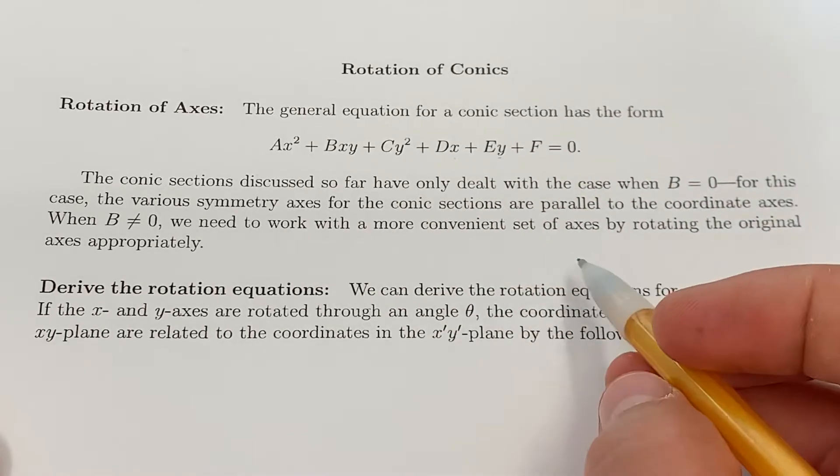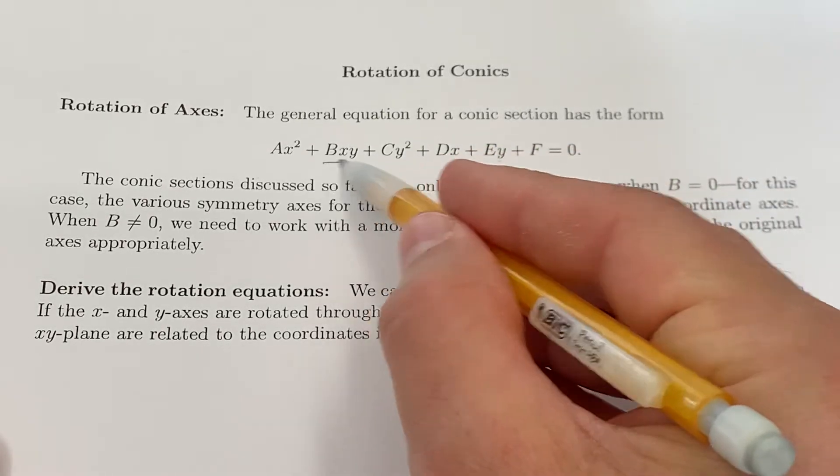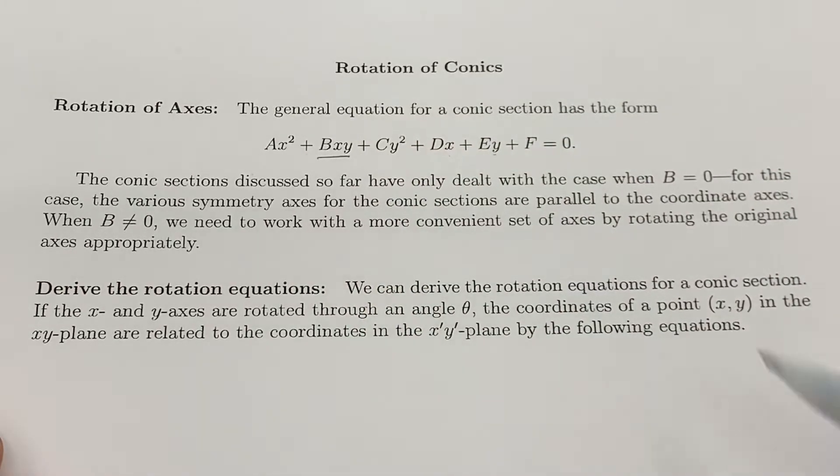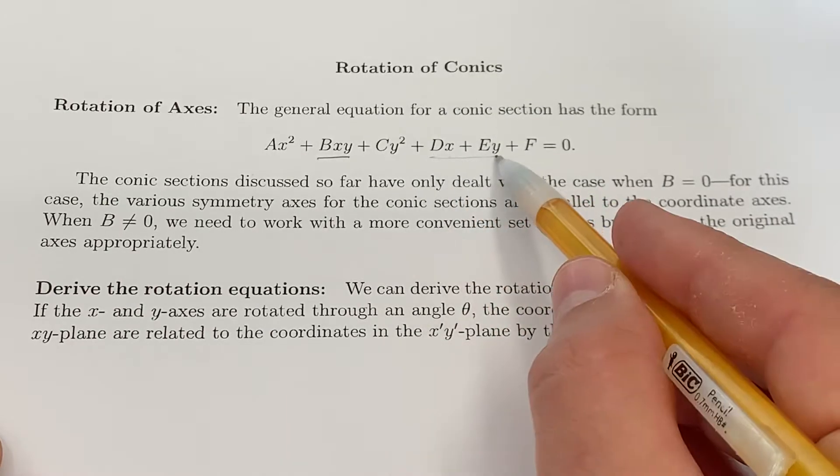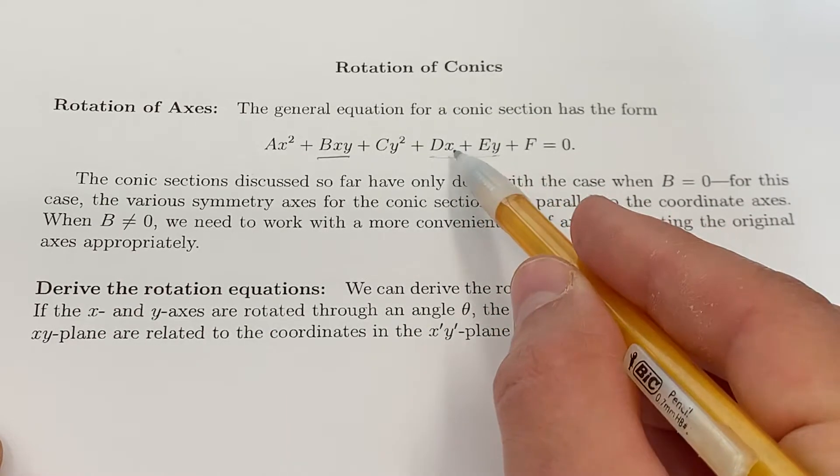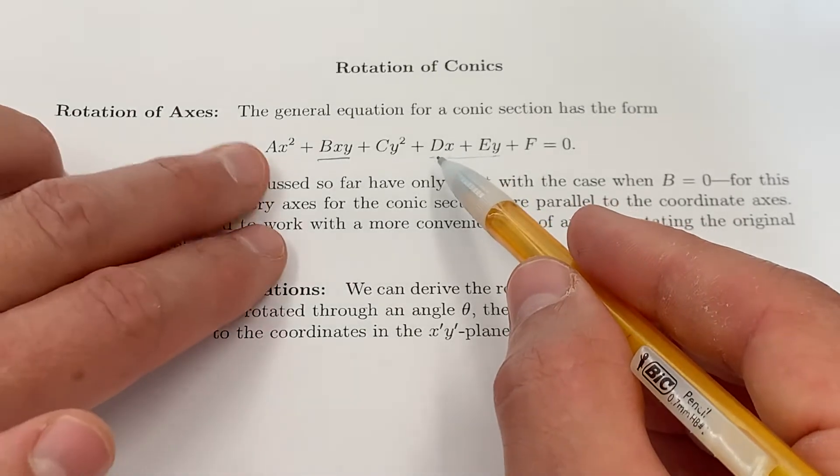The conic sections we've discussed so far all have this term equal to zero. Recognize these terms essentially just shift the shape left and right. We've already done translations of those shapes.